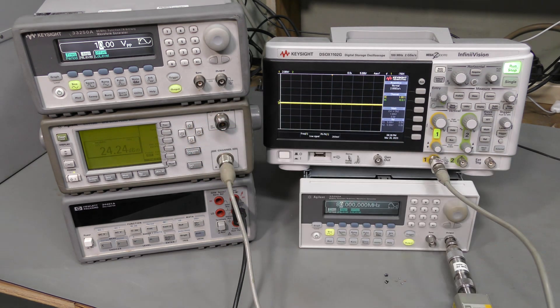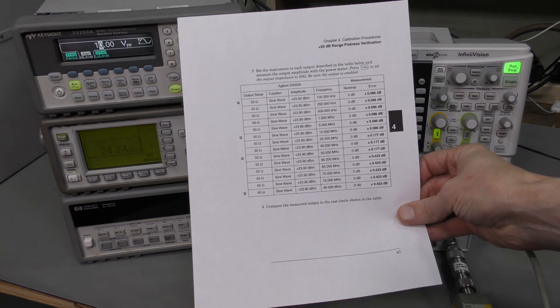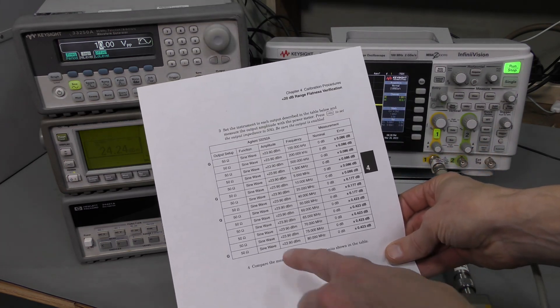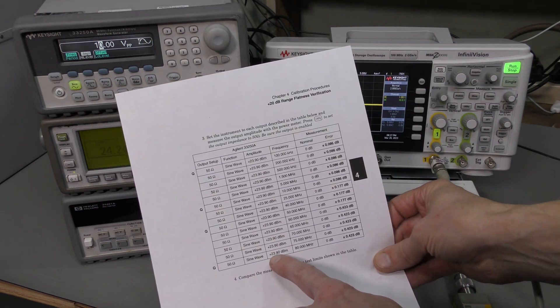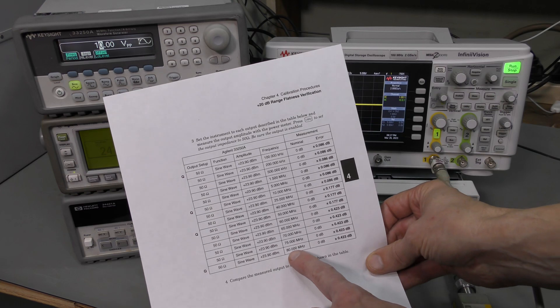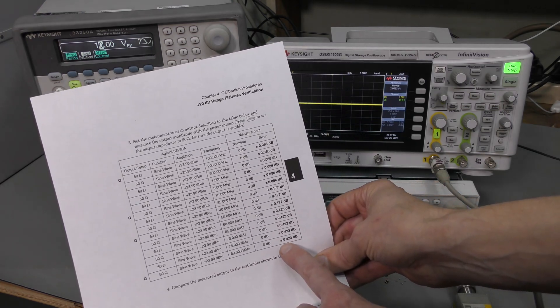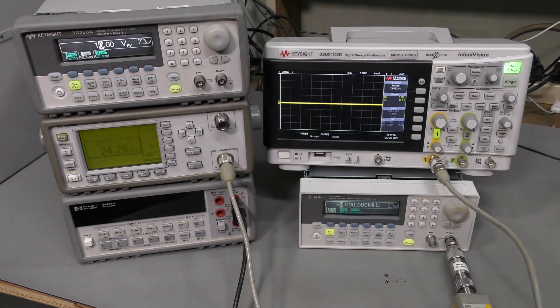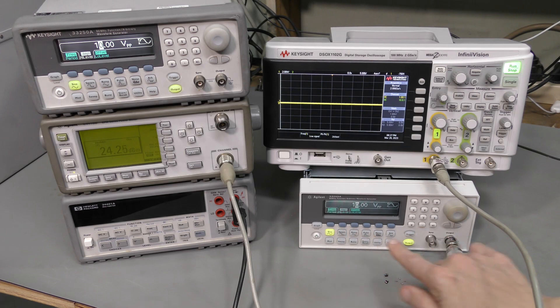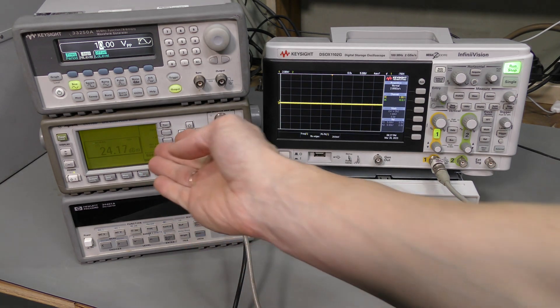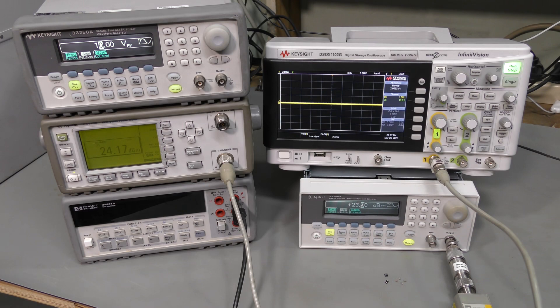So. Here it is. 24.24 dBm. And here I printed from the service manual. Verification table. We are supposed to set 23.9 dBm at 80 MHz and verify that we are within 0.423 dB. So. Let's see. We can set it to 23.9 dBm. And it's a bit higher. 24.17. And it is well within that spec of 0.423 dB.